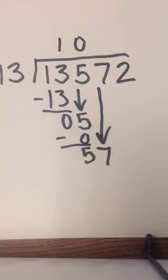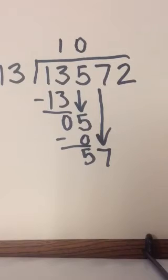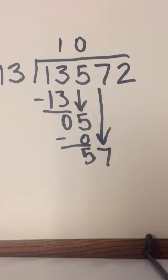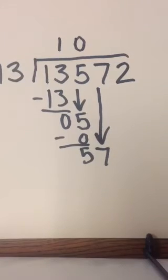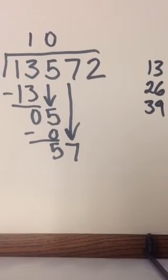We have to ask ourselves how many times 13 goes into 57. If we do not know our multiples of 13, we need to write them out. I have 13, then 26, then 39. So I'm still approaching 57 here. We go from 39 to 52.